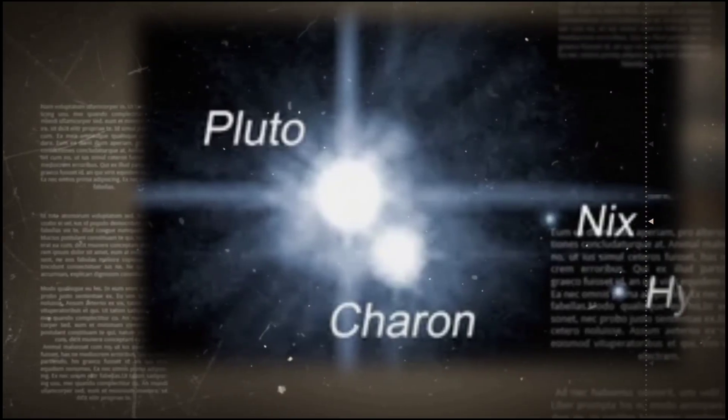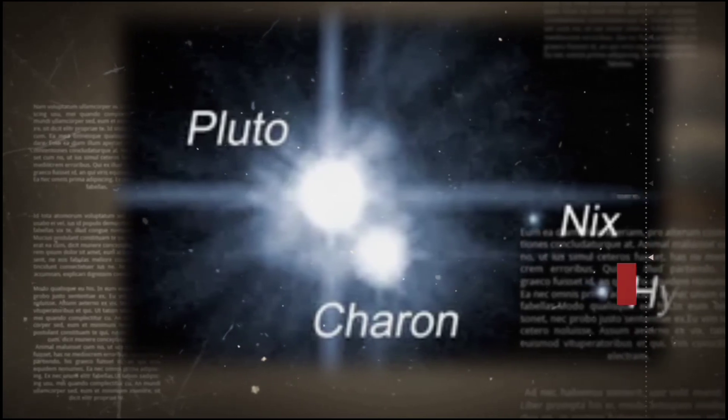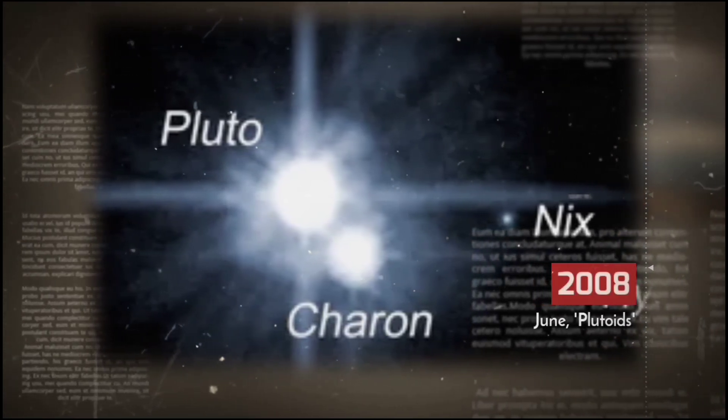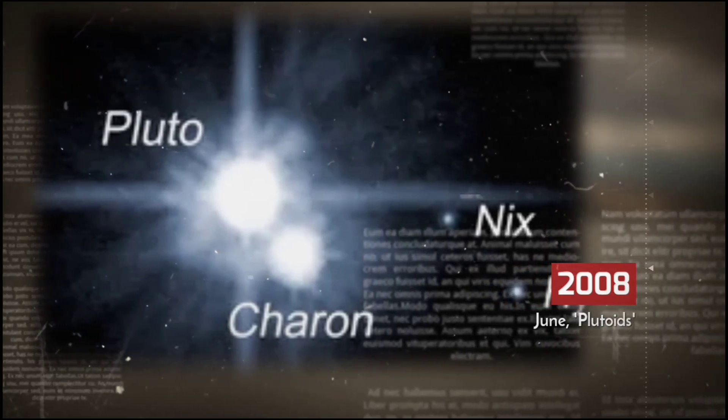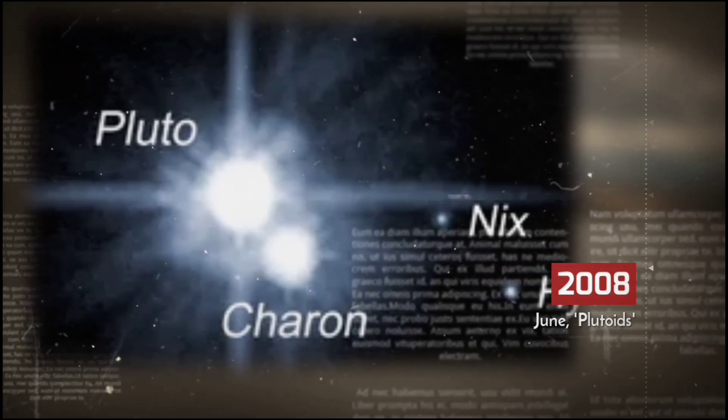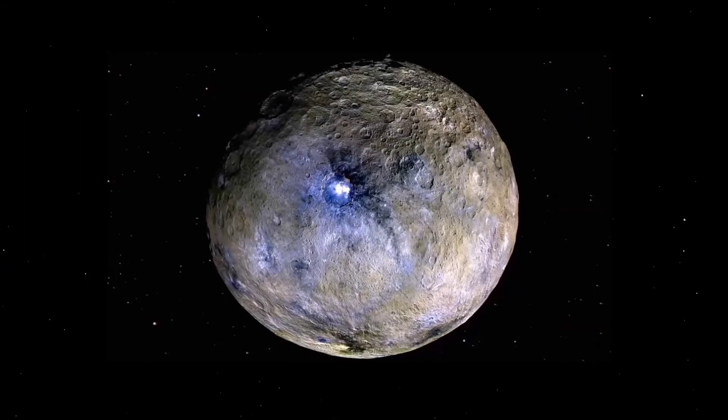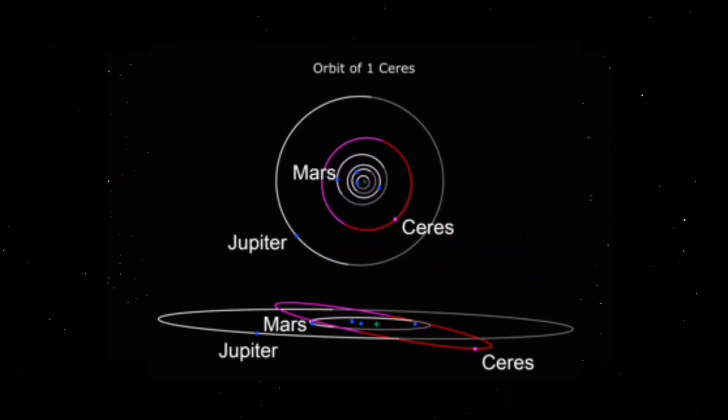In June 2008, the IAU announced in a press release that the term Plutoid would henceforth be used to refer to Pluto and other planetary mass objects that have an orbital semi-major axis greater than that of Neptune. Ceres will not be a Plutoid because its orbit lies between the orbits of Mars and Jupiter.